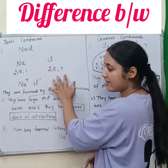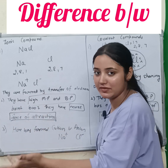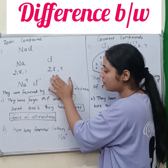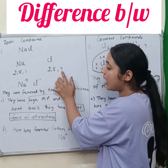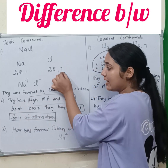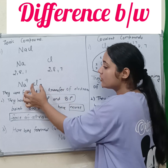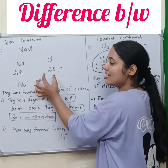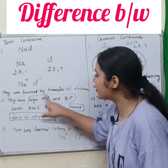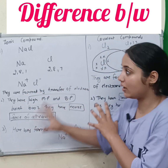Chlorine, atomic number 17, has electronic configuration 2-8-7. Here, it needs one electron, so it will gain one electron and becomes Cl⁻. This is a transfer of electrons.